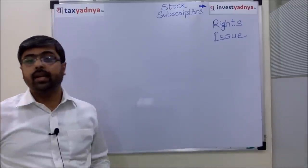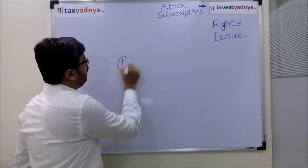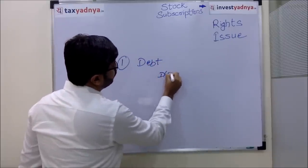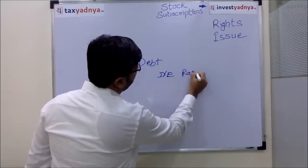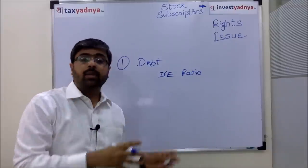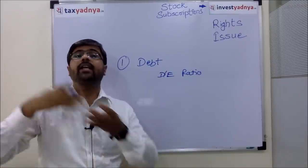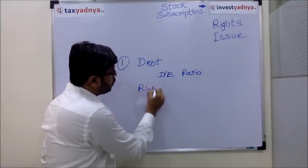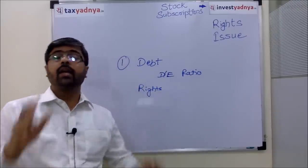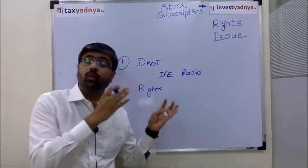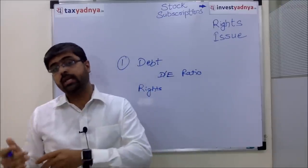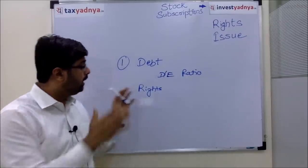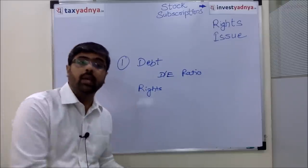Now, what is the rights issue used for? The first reason is that if the company's debt is increased — if the debt-to-equity ratio is increased — then they don't want to raise more debt. So they bring a rights issue instead. What is happening in the telecom sector right now is a major example of this, because their debt-to-equity ratios have increased and they can no longer raise debt. So what they are trying to do is raise equity funds.